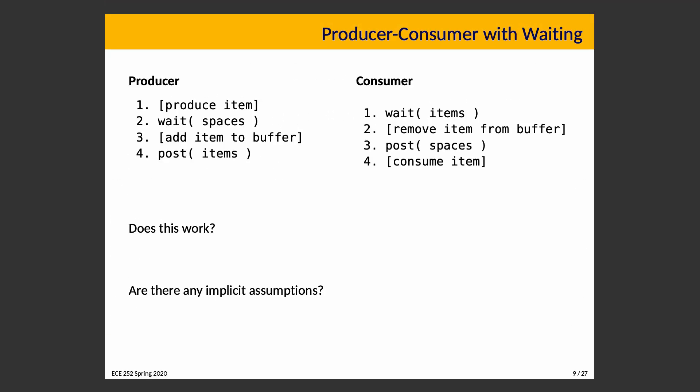Producer-Consumer with waiting: the producer produces an item, waits on the semaphore 'spaces', adds an item to the buffer, and then posts on the 'items' semaphore, indicating there is an item. The consumer waits for there to be items, removes an item from the buffer, posts on 'spaces', and then consumes the item. Does this work?